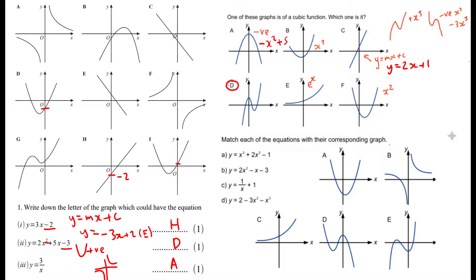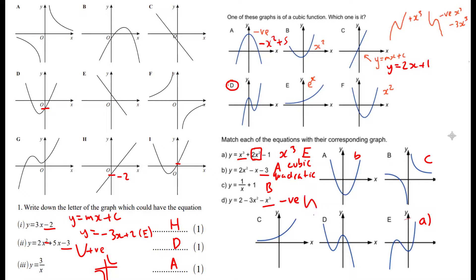Let's try to match each of these equations with the corresponding graph. The highest power is x-cubed, so it's cubic — even though it's got a squared term in it, you always look at the highest power. So the cubic is E. The quadratic with a negative y-intercept — A matches with B. The reciprocal graph — B matches with C. The negative cubic: we know it's that shape, so that must be D — D matches D.